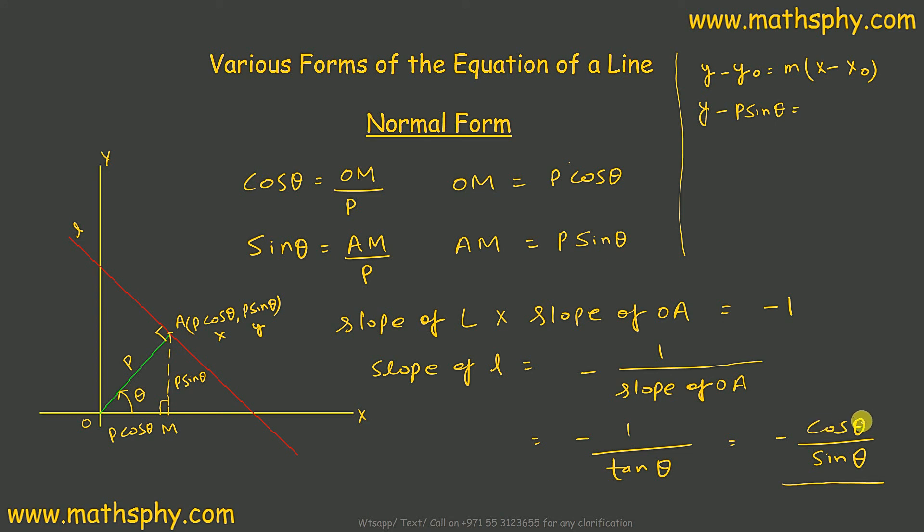Slope is negative cos theta over sin theta. So, I'll write negative cos theta over sin theta into x. I need to know x over P cos theta.